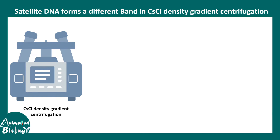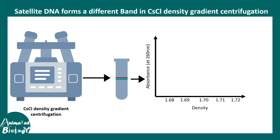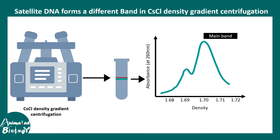Satellite DNA was first characterized from an ultracentrifugation reaction. In cesium chloride density gradient centrifugation, the main genomic DNA forms a thick band at a specific buoyant density, but a small band was observed on the lighter side — this is known as the satellite band. If we plot that data in an absorbance versus density graph, the main band has a buoyant density around 1.7, whereas the satellite band has a lesser, lighter buoyant density.